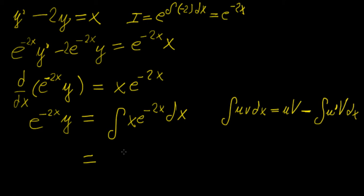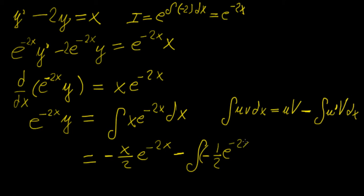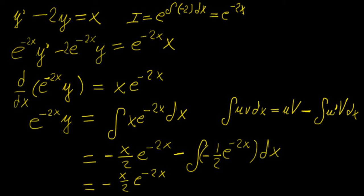Integrating e^(-2x) first gives -1/2 · e^(-2x). So by integration by parts we get: -x/2 · e^(-2x) minus the integral of 1 times (-1/2 · e^(-2x)) dx. Taking out the constants and integrating again, the result simplifies to -x/2 · e^(-2x) - 1/4 · e^(-2x) + C.